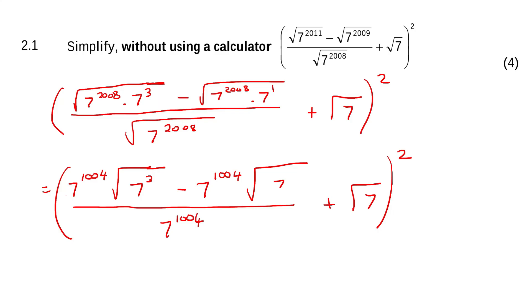So what I'm going to do is I'm going to realize that I can take out a 7 to the 1004 as a common factor. And then we're going to be left with 7 square root 3 minus square root 7 over 7 to the 1004 and then plus square root 7 and then squared. Now these parts can now cancel.